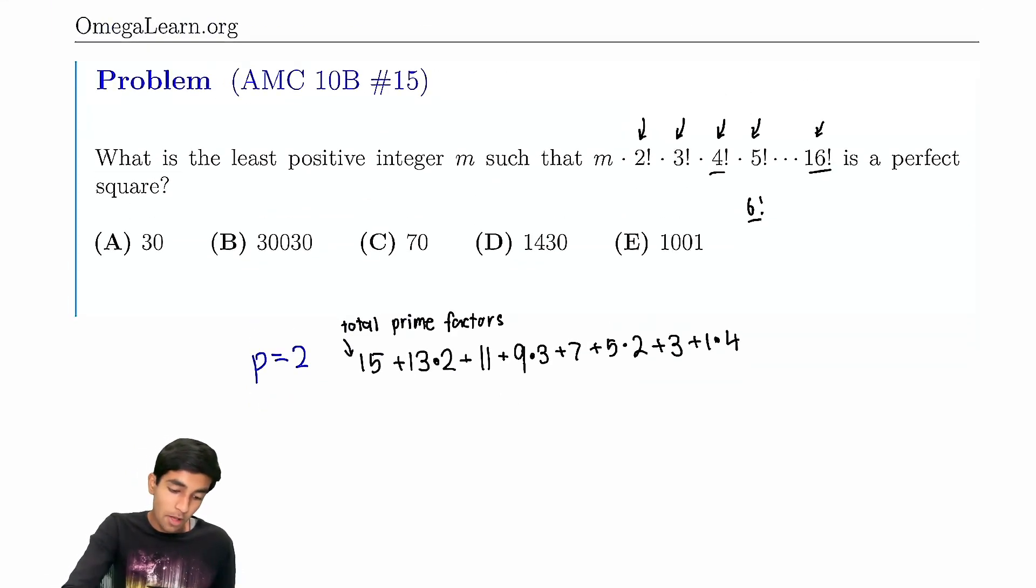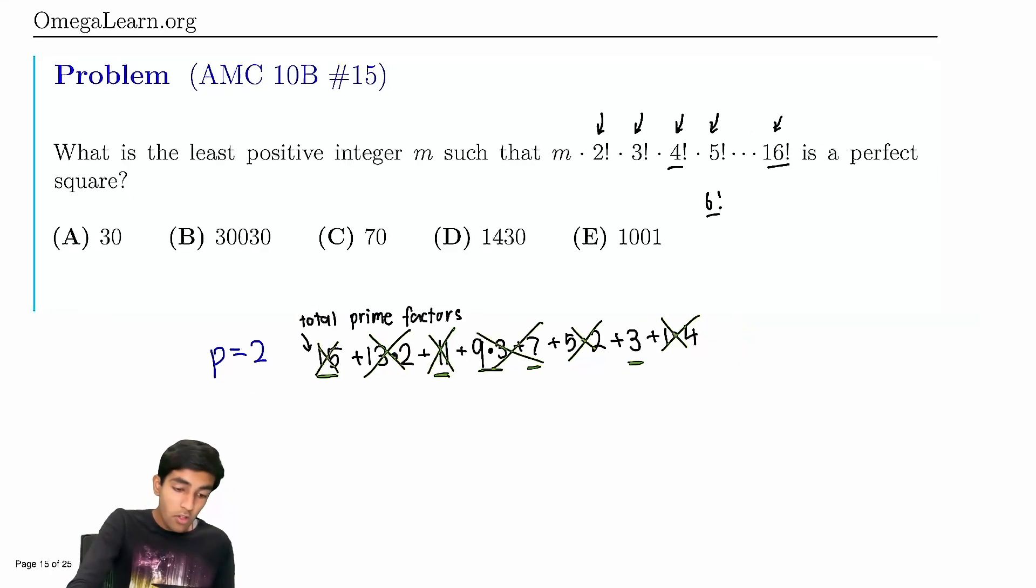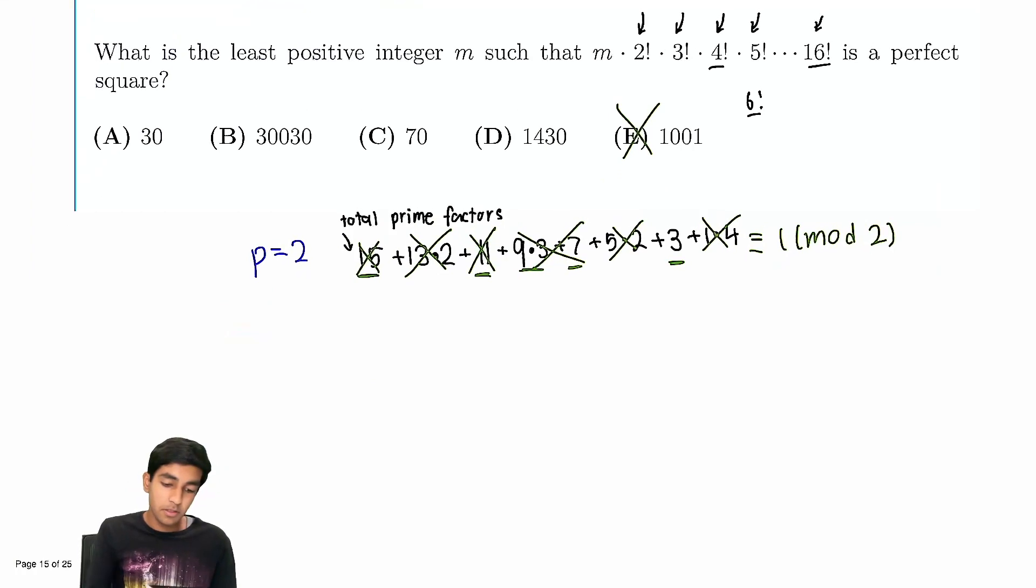So the key thing here is in order to determine whether m is a perfect square, we only care about the parity of this number. Because if it's odd, then we need another factor of 2. And if it's even, we don't need another factor of 2 in m. So we're just going to ignore all these even terms, right? Because we only care about the parity. So that's even, that's even, that's even. And now we just add up these remaining odd terms, right? 15 plus 11 are 26, and that's even, so we can cross these both out. 27 plus 7 is even, so we cross that out. And we're left with 3, which is odd. So all in all, the number of factors of 2 is something odd, right? Or we can just say it's equivalent to 1 mod 2. So therefore, we need a factor of 2. So automatically, we can eliminate one choice.